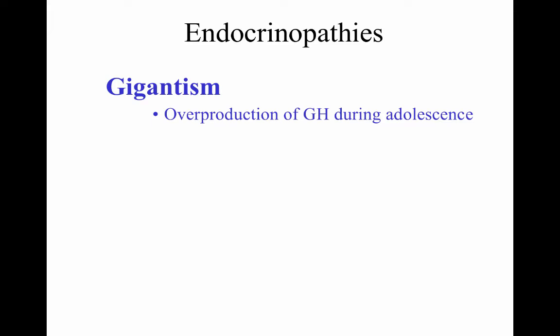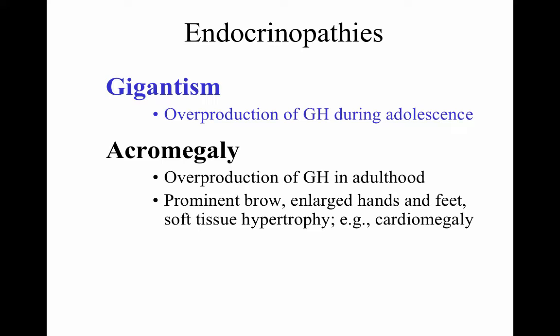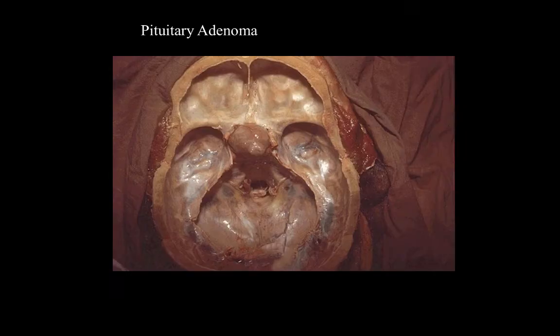Some endocrinopathies occur when we fall out of homeostasis within our endocrine system. Gigantism results from overproduction of growth hormone during adolescence or development. Acromegaly is overproduction of growth hormone in adulthood, producing a prominent brow, enlarged hands and feet, and soft tissue hypertrophy — for instance, cardiomegaly or enlargement of the heart, which drastically reduces the effectiveness of heart tissue.